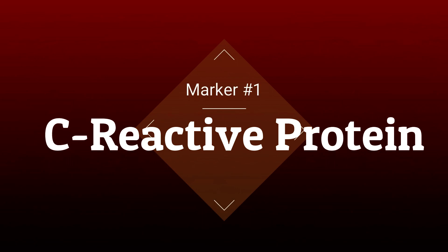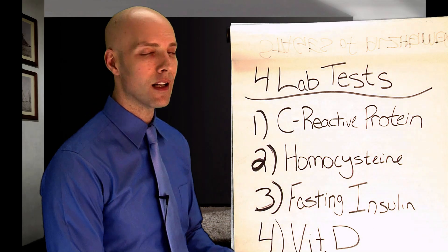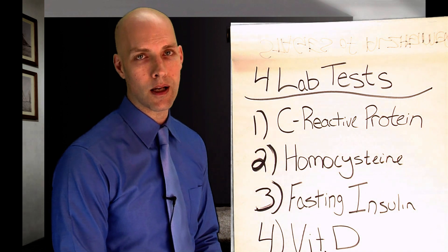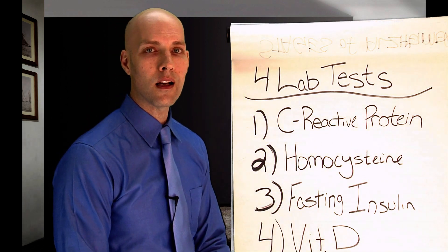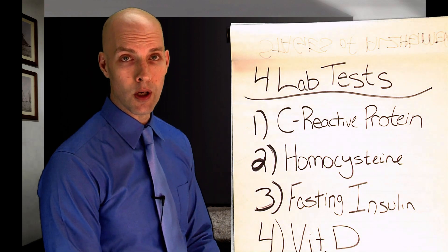The first one is called C-reactive protein. This is a protein that's produced by the liver and it's a sign of inflammation in the body. So we want this marker to be below three. The lower the better for this marker.